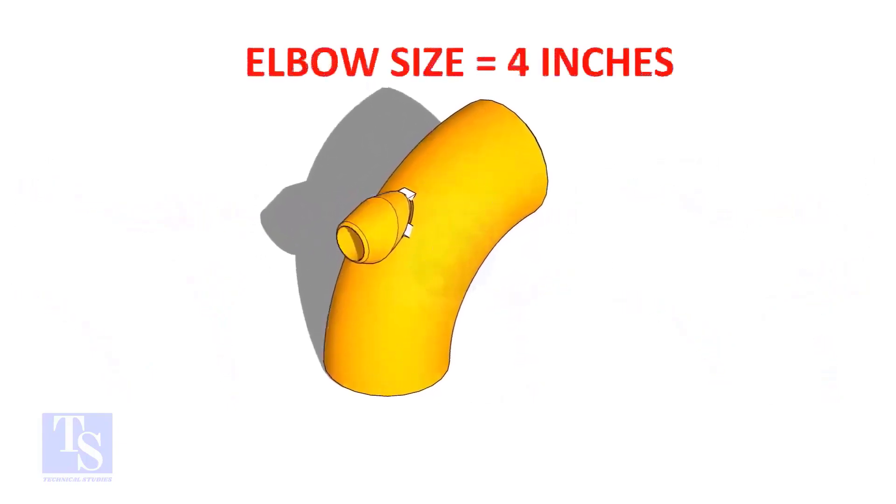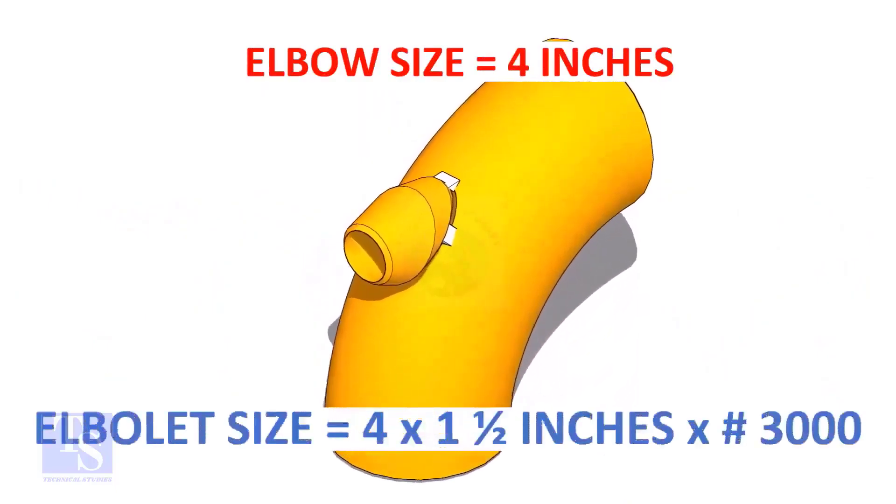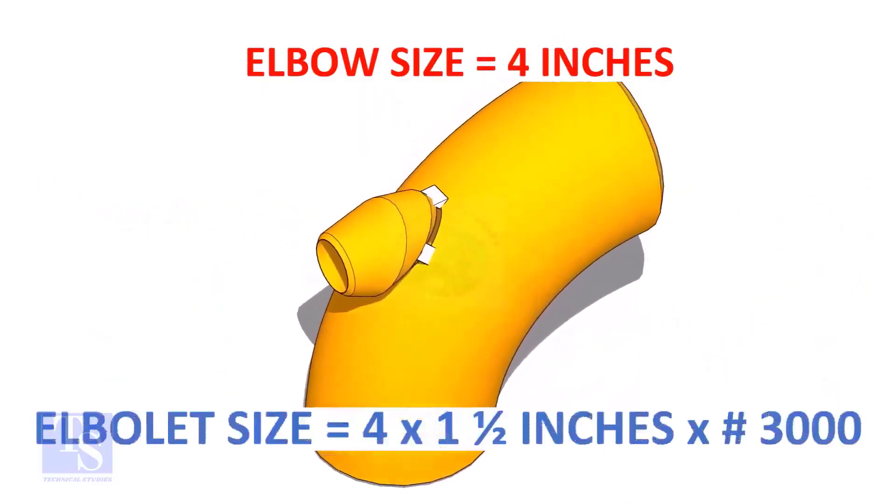The size of our elbow is four inch. And the size and rating of the elbowlet is one and a half inch and three thousand pounds respectively.